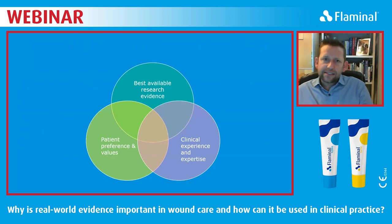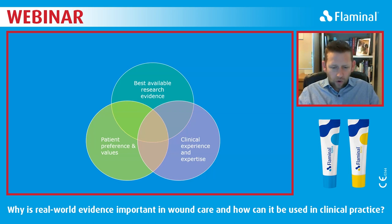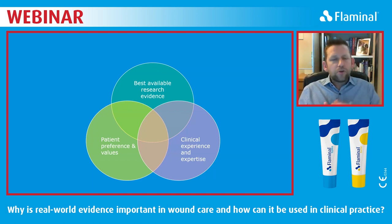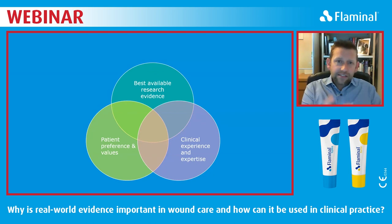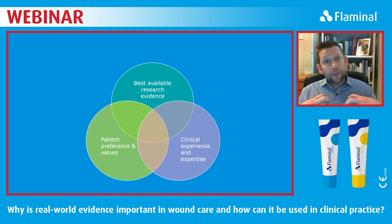Evidence-based practice is an amalgamation of research evidence. This diagram talks about the best available research evidence — not just research evidence, but the best available, and there's a good reason for that. There's obviously patient preference and values, and our patients have to be the heart of everything that we do. Clinical experience and expertise also matter — through the COVID pandemic, quite often we were sharing information where clinical experience was what we were working on day to day. For evidence-based practice, we need an amalgamation of these things.